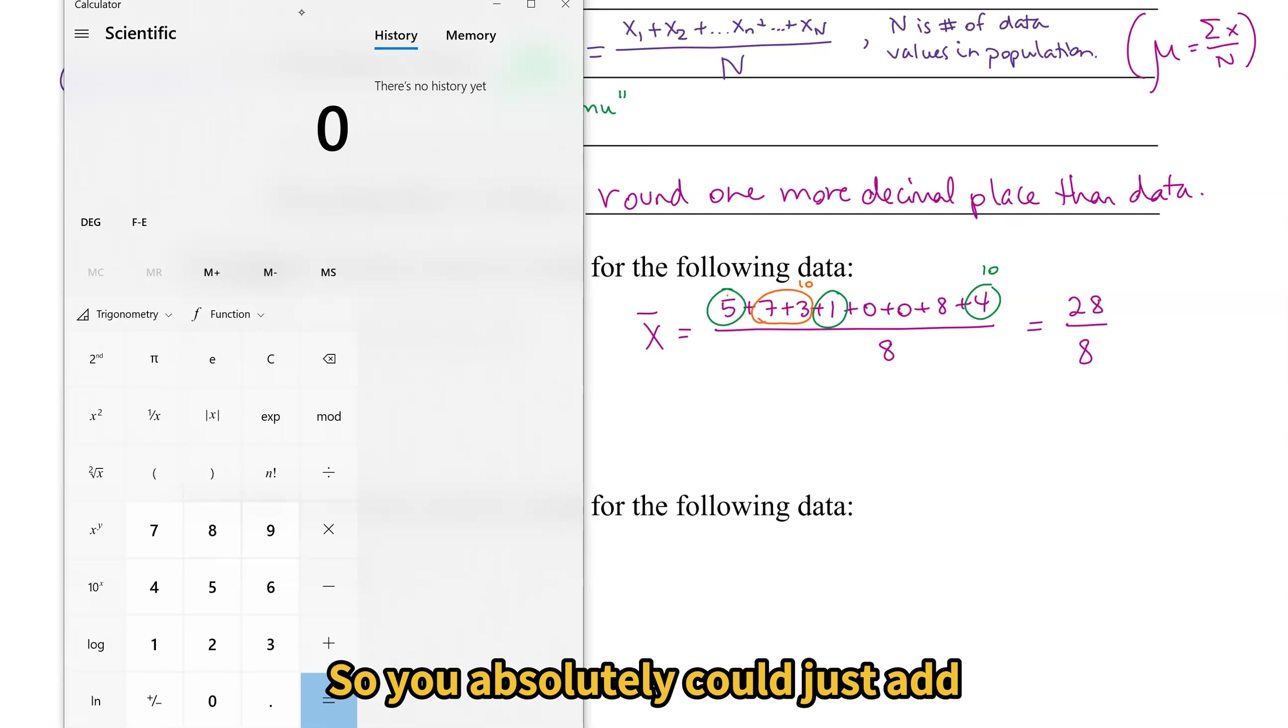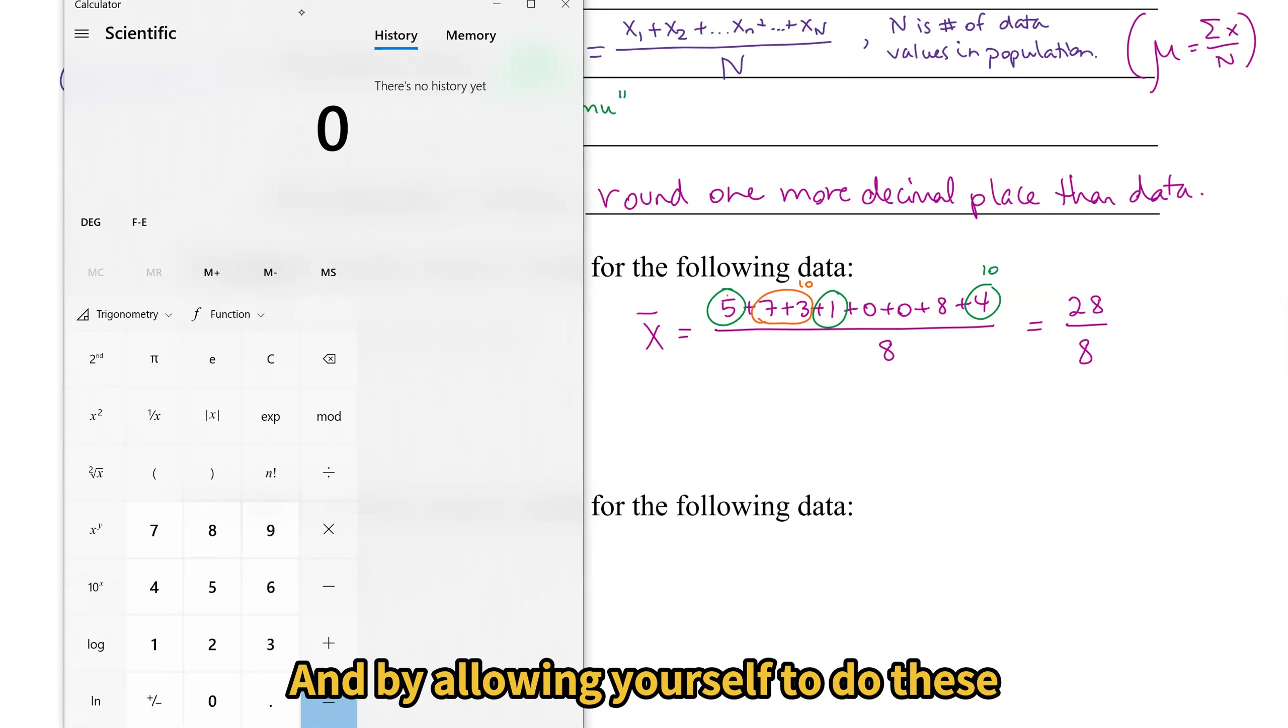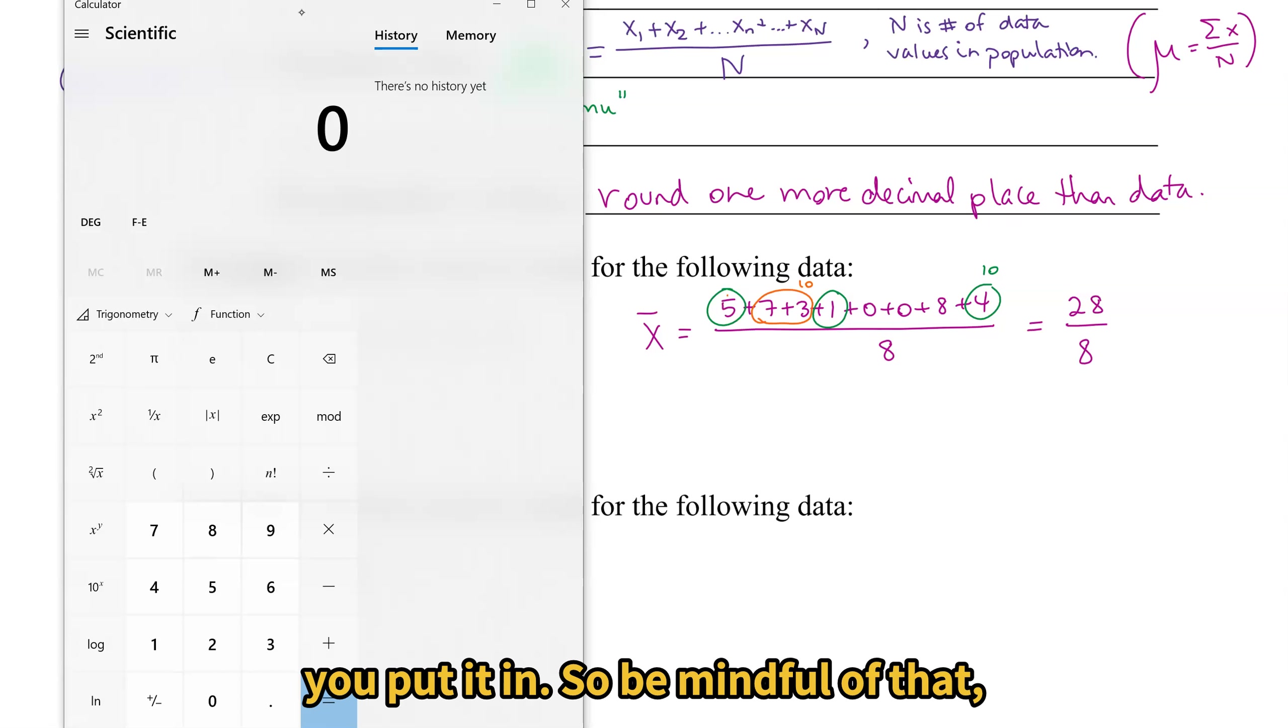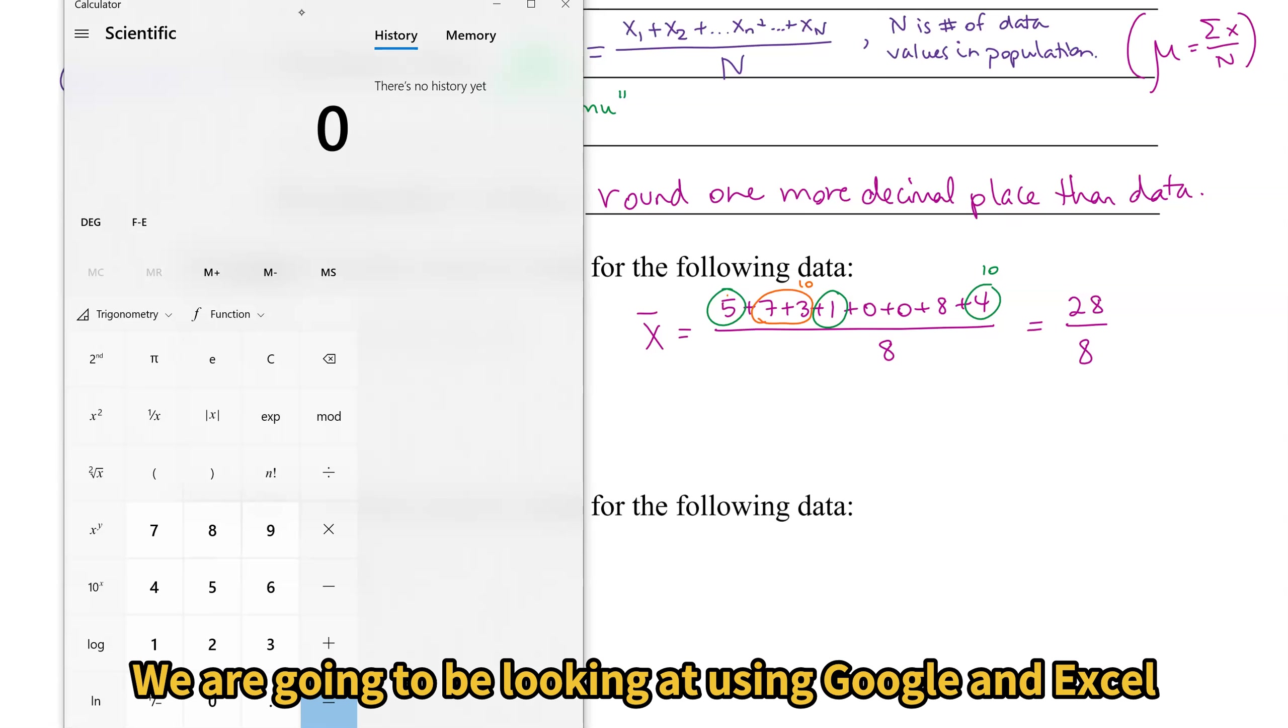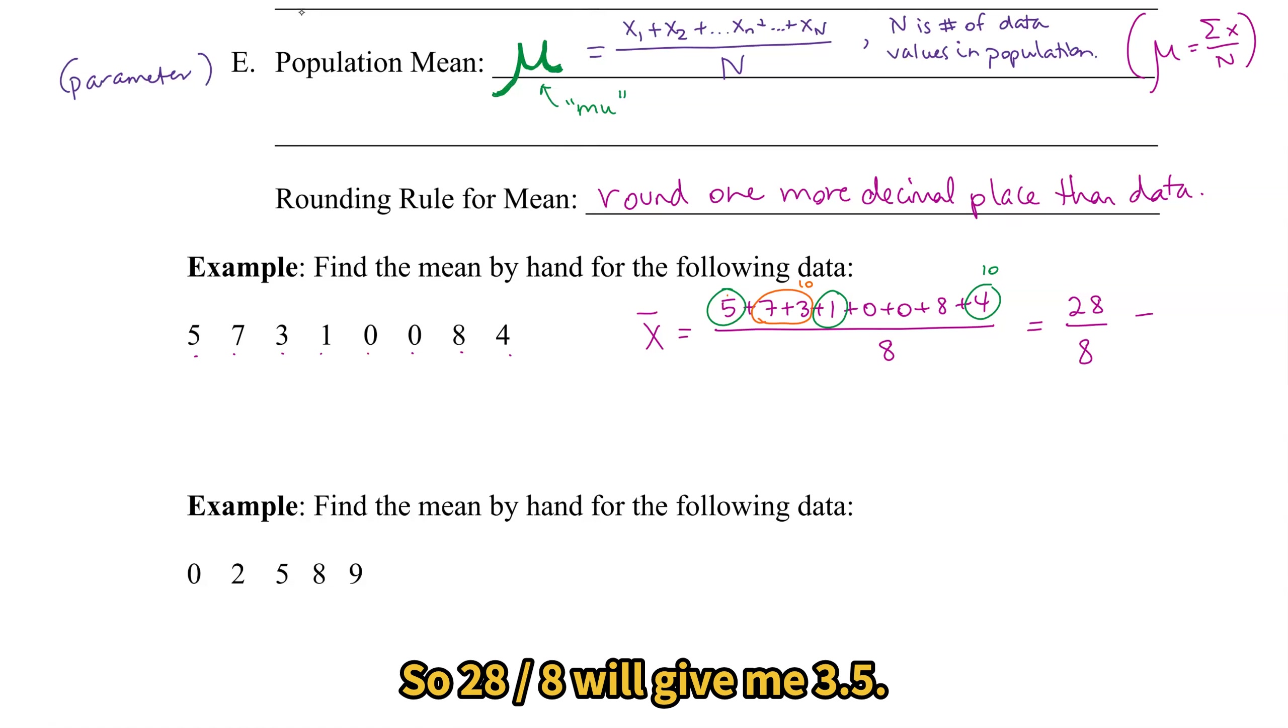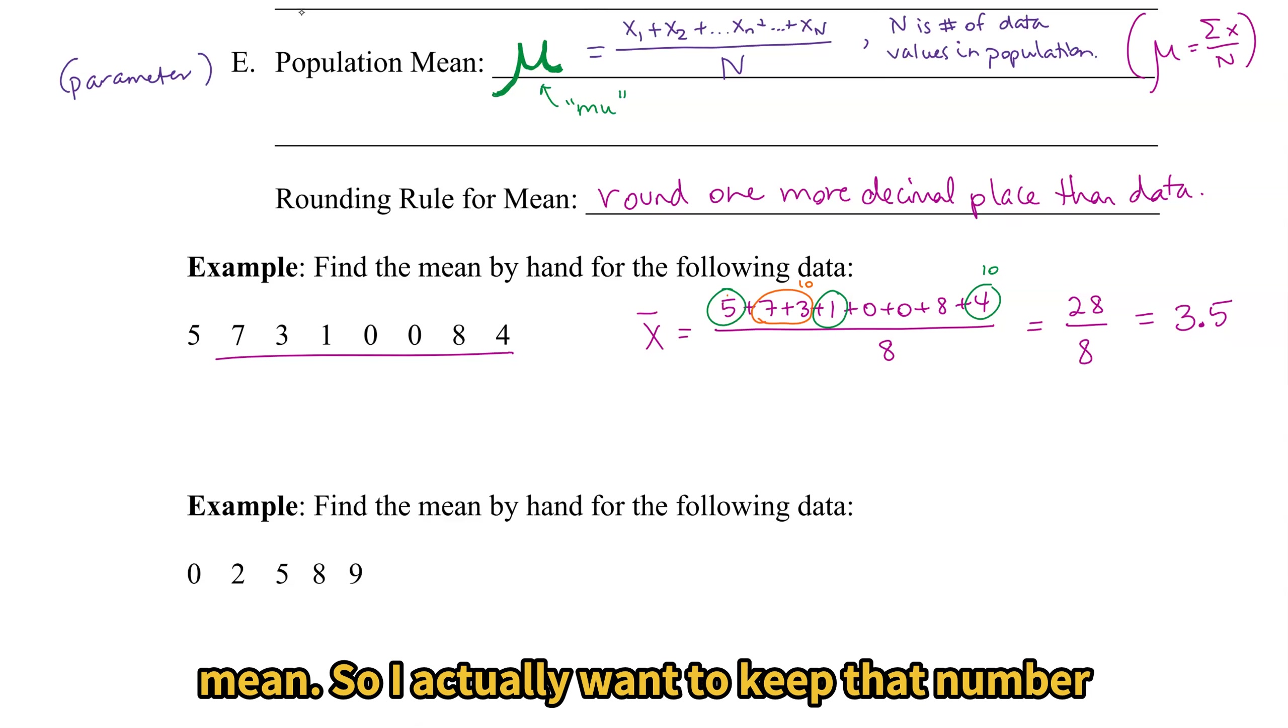So you absolutely could just add these up on your calculator. I just want to show you that you can do some of this in your head. And by allowing yourself to do these small calculations on your own without a calculator, when you do go to the calculator, it may help you recognize if you've made a mistake when you enter them in. Almost as a good way to estimate before you put it in. So be mindful of that when you're doing these things by hand. Yes, you can use a calculator for sure and add them up. Or add them in your head if they're small. We are going to be looking at using Google and Excel to do these means also. So 28 divided by 8 will give me 3.5. What's important about this number is that I have whole number data and I have one more decimal place for my mean. So I actually want to keep that number as it is, 3.5.